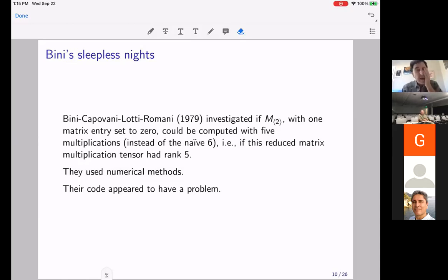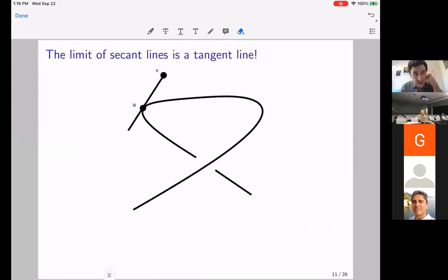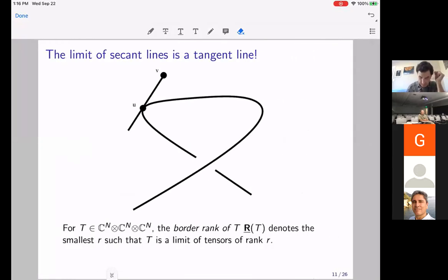were trying to see if you take the two-by-two matrix multiplication tensor and you insist that it only eats matrices where one of the entries, say the top right entry, is zero. Well, naively, you could do that with six multiplications, and they were trying to test if you could do it with five. And they were motivated because if you could do that, then you could glue a few of these together and get a good algorithm for some larger matrix multiplication tensor. And so, they decided to do it using numerical search methods. They would start at a random point,